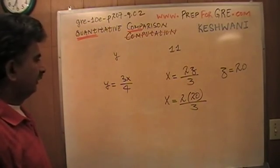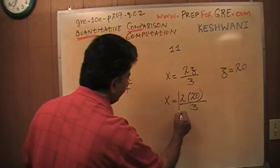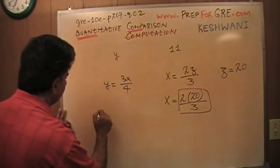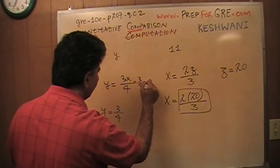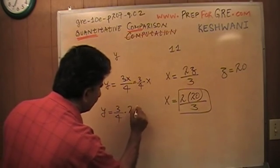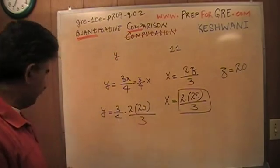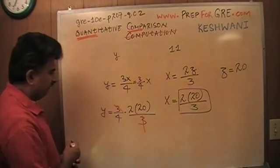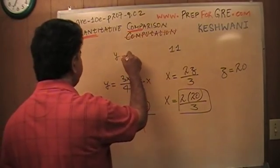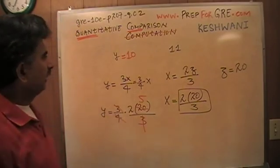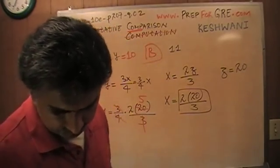All you do is plug in z equals 20: x equals 2 times 20 over 3. Don't waste time simplifying — just leave it and plug it into the y equation. So y equals 3 over 4 times x, which is 3 over 4 times (2 times 20 over 3). The 3s cancel out, and 4 goes into 20 five times, giving you 2 times 5. So y equals 10. On the other column I have 11, therefore the answer is B.